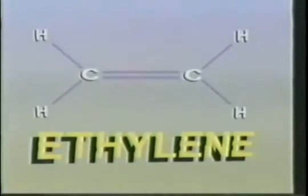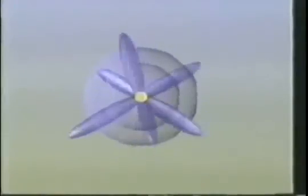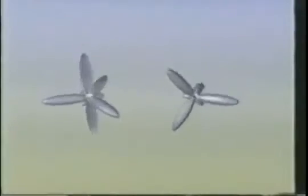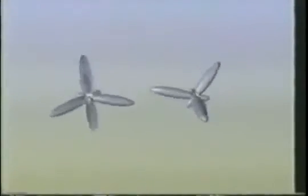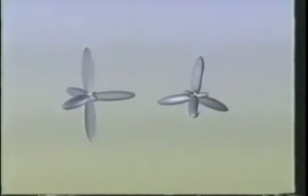But how do carbon atoms form double bonds, indicated by the structural formula for ethylene? Let's first return to carbon in its ground state. Carbon has another quantum trick up its sleeve — a new hybrid state. Notice that this hybrid model has a different structure than the hybrid model with the SP3 orbitals. It is this specific, different hybrid state that will explain the nature of the double bond.